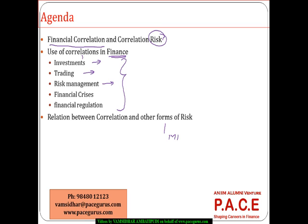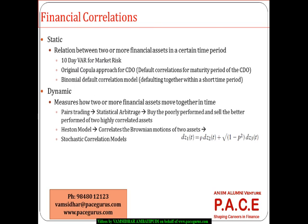How is correlation linked with market risk? How is correlation linked with credit risk? How is it linked with systemic risk? All these things we are going to look at.